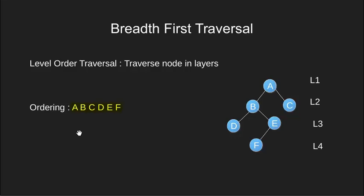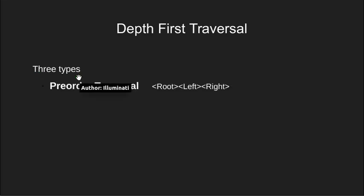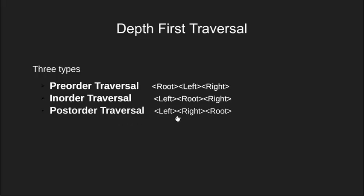Now we will look into the depth first traversal. We divide it into three categories. First is the preorder traversal — in this we first traverse the root, then the left subtree, and then the right subtree. Next we have inorder traversal, where we first traverse the left subtree, then the root data, and then the right subtree. Then we have postorder traversal, where we first have left subtree, then right subtree, and finally the root data.